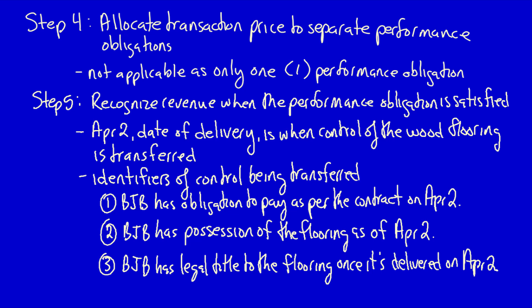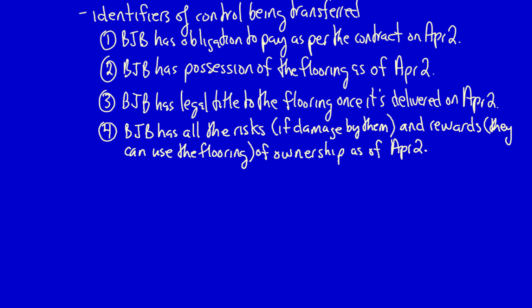In addition, BJB has the rewards of ownership because they can use the wood as wood flooring or they can sell it to a third party. BJB after delivery on April 2nd can do anything they want with the wood flooring, so they definitely have all the risks and rewards of ownership. And five, BJB has accepted delivery of the wood flooring on April 2nd, which is another indicator of control being transferred.